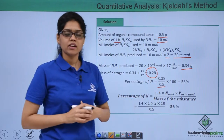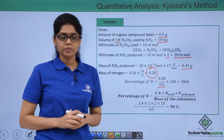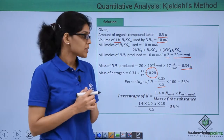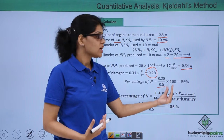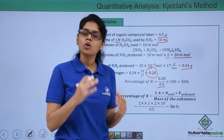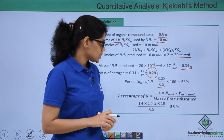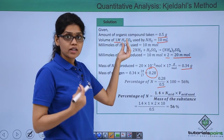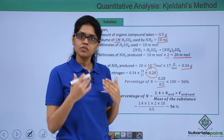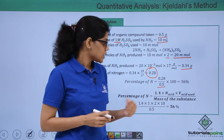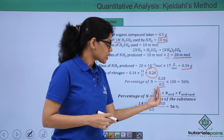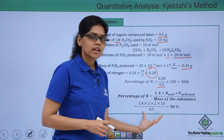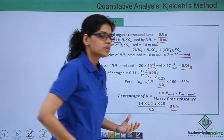The percentage of nitrogen is simply this value divided by the total mass of organic compound multiplied by 100, giving us 56% nitrogen. If you do not want to go through all these steps, you can directly use the formula from the previous video: 1.4 × normality of acid × volume of acid / mass of organic substance. Here, normality of H₂SO₄ is molarity (1) multiplied by its basicity (2), and volume is 10 ml, giving the same result of 56% nitrogen.